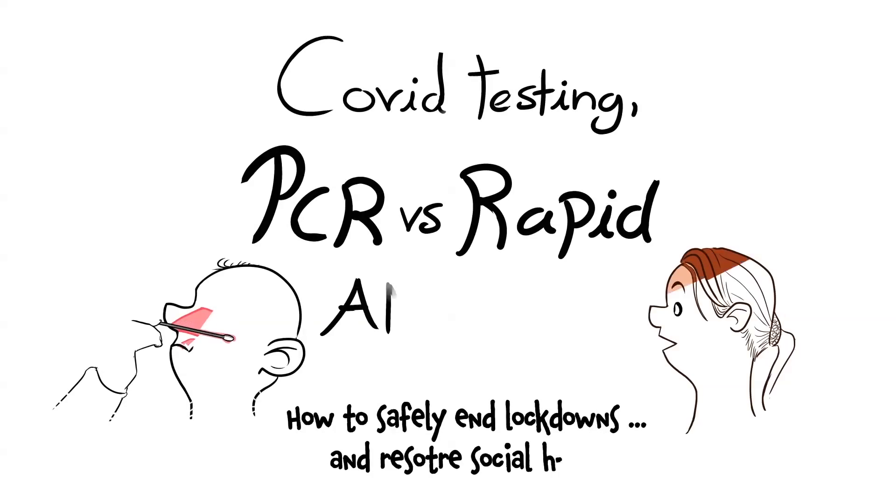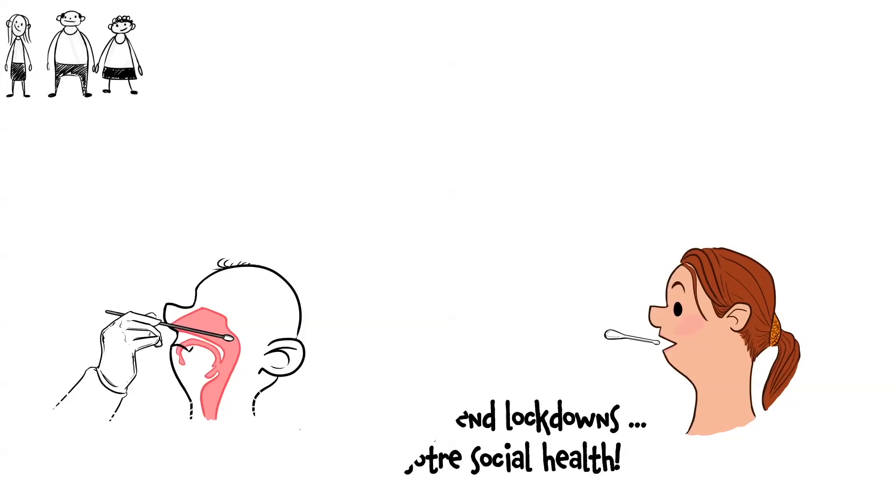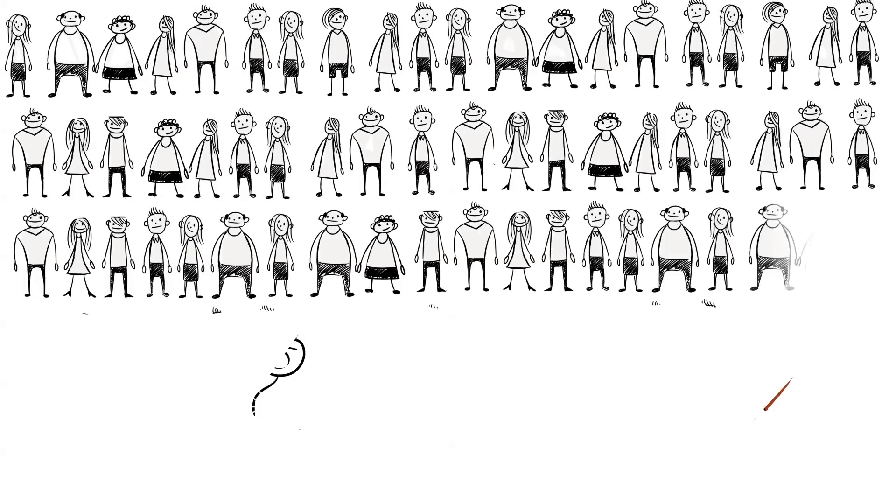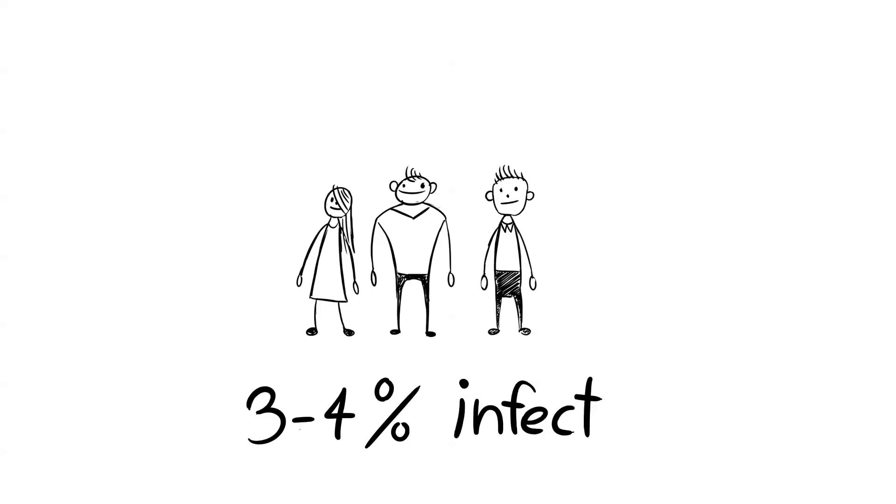PCR test versus rapid antigen: what you need to know. Say we take a hundred people and three or four percent are positive in a PCR test. That means 96 are okay, so we'll focus on the PCR positive guys. Remember, PCR test was used.